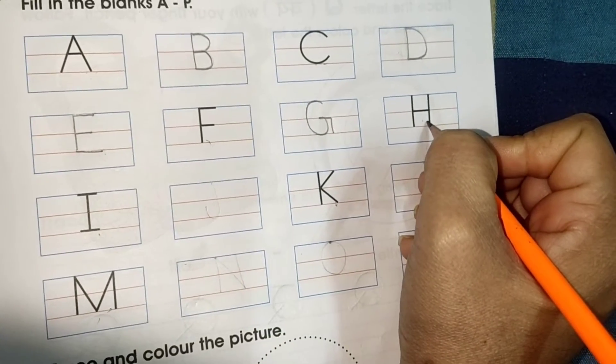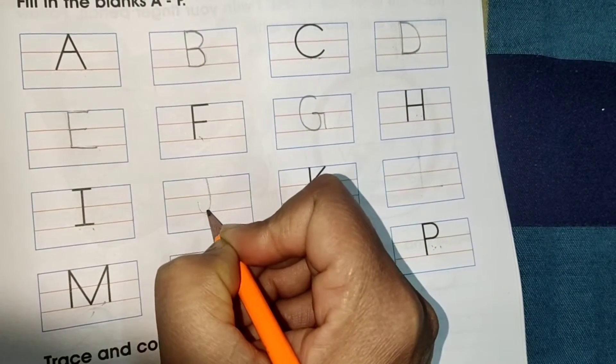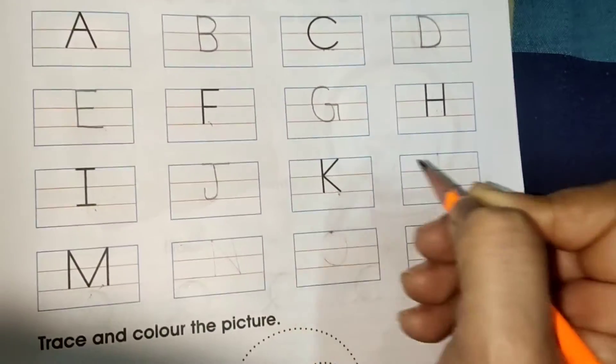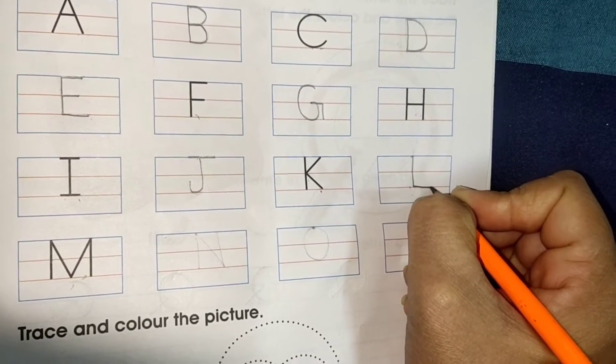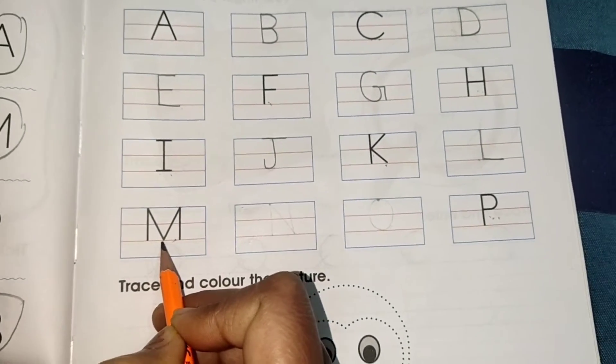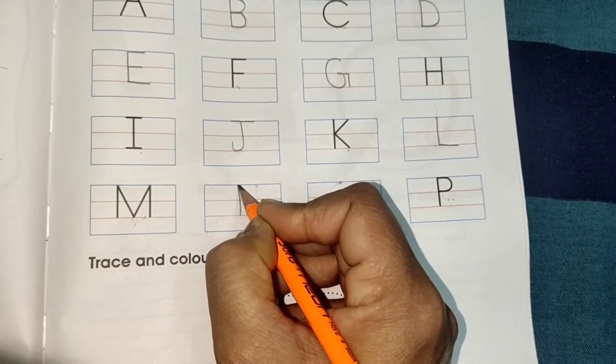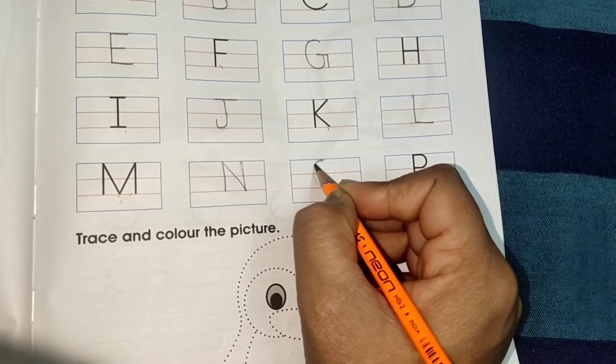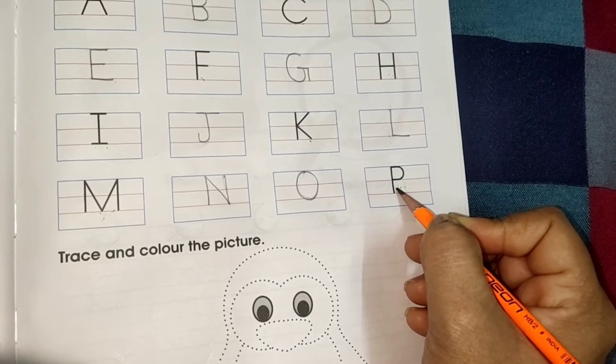G ke baad H. I. What comes after I? It's J. And this is K. What comes after K, K ke baad kya aata hai? L. And what is this? It's M. M ke baad? M ke baad? N. After N, O. P. Okay.